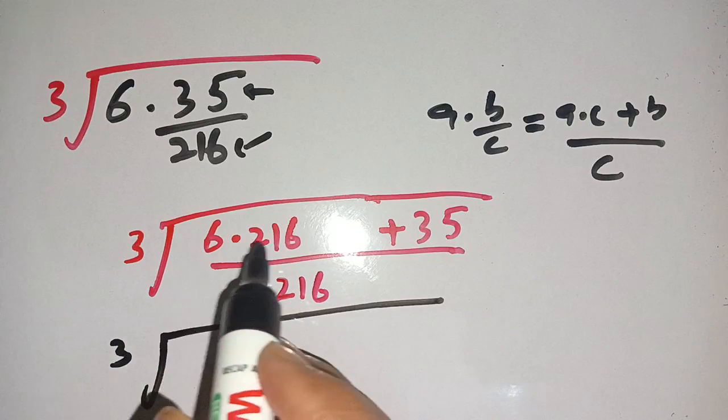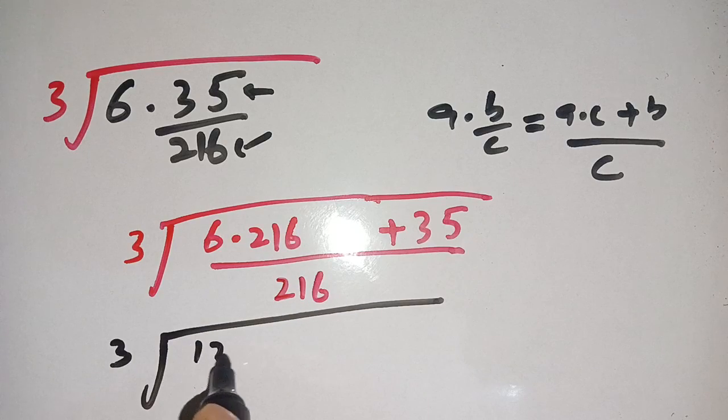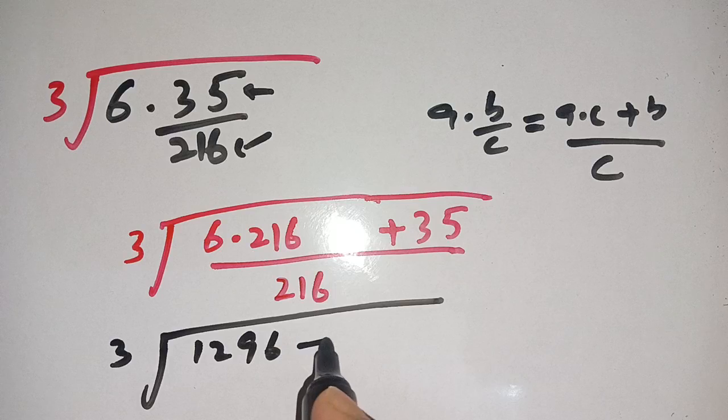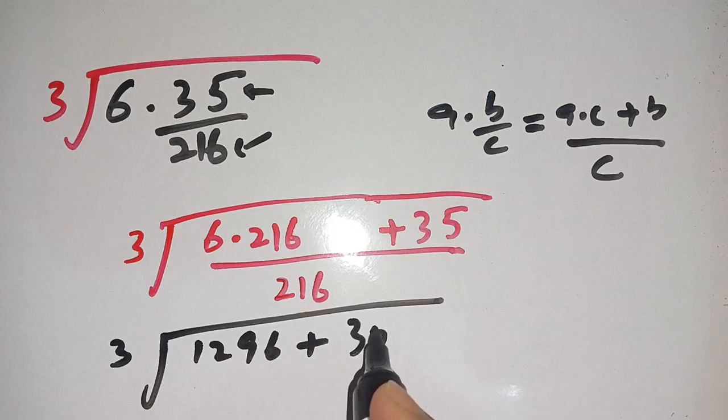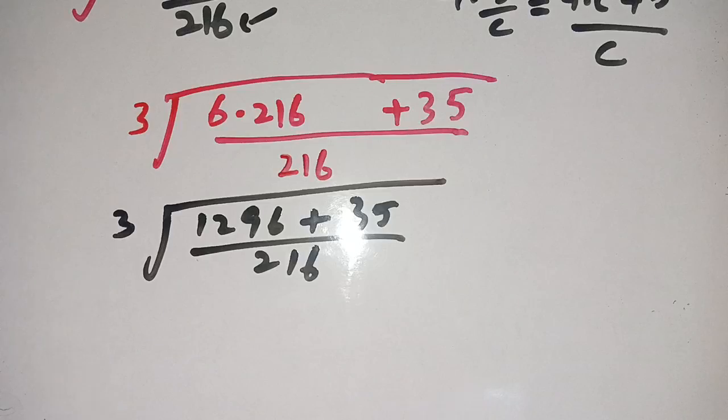On the next step we get cube root of 1296 plus 35, which becomes 1331, divided by 216.